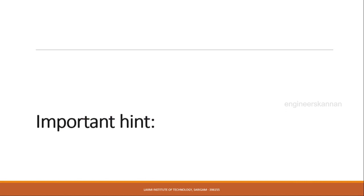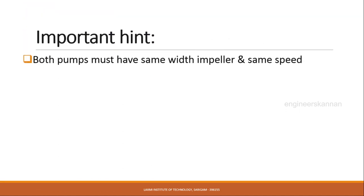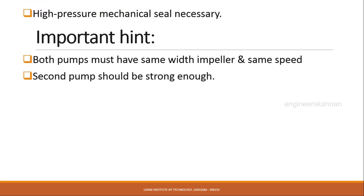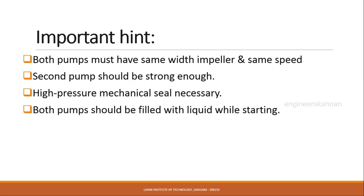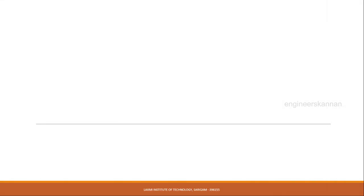There are important points to notice before connecting two pumps in series. First, both pumps must have the same width impeller and run at the same speed. The second pump must be stronger than the first, with high pressure mechanical seal compulsorily required due to pressure increment. Both pumps should be filled with liquid before starting, and always the second pump is started after the first pump.